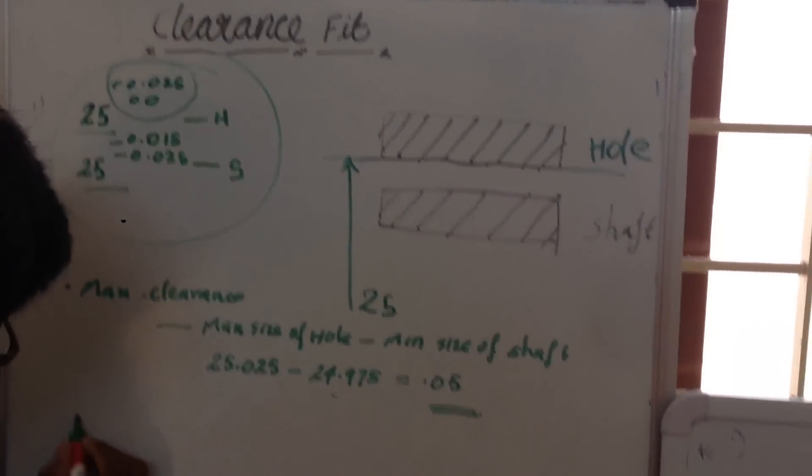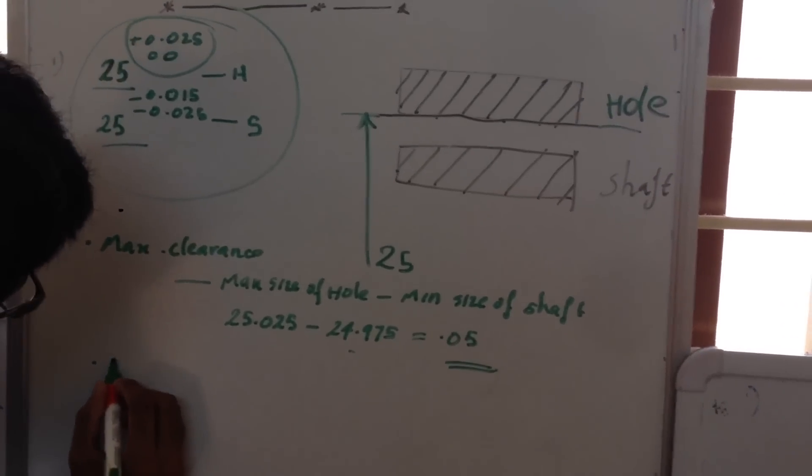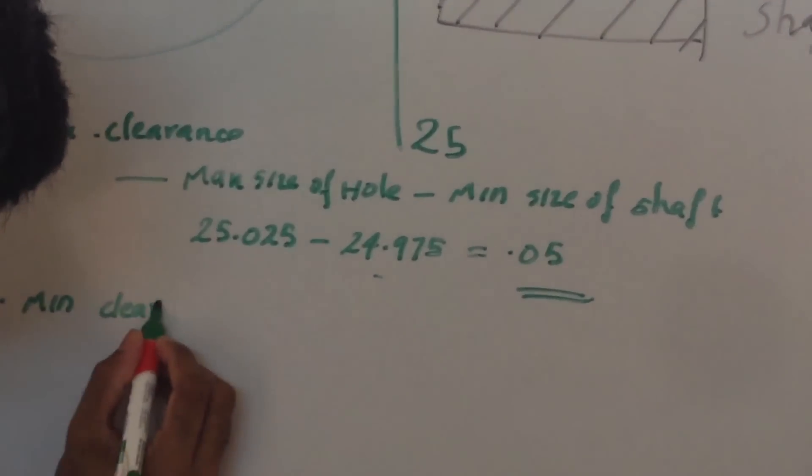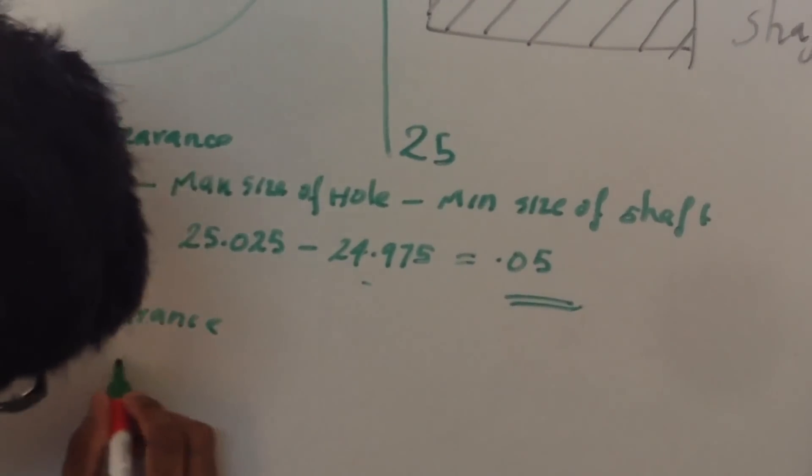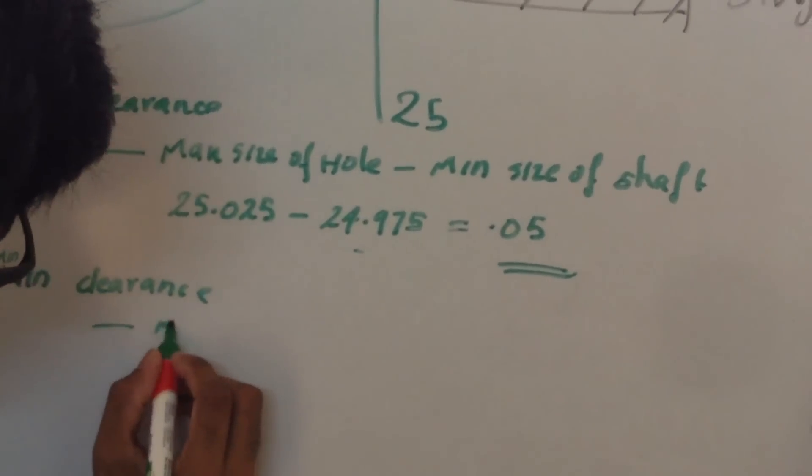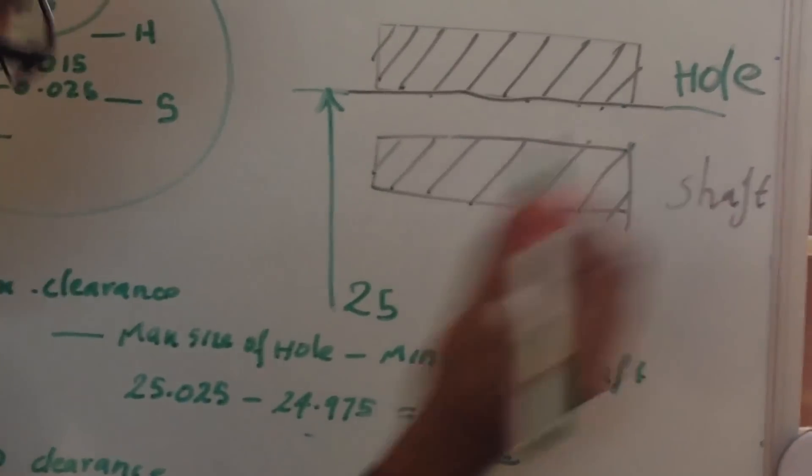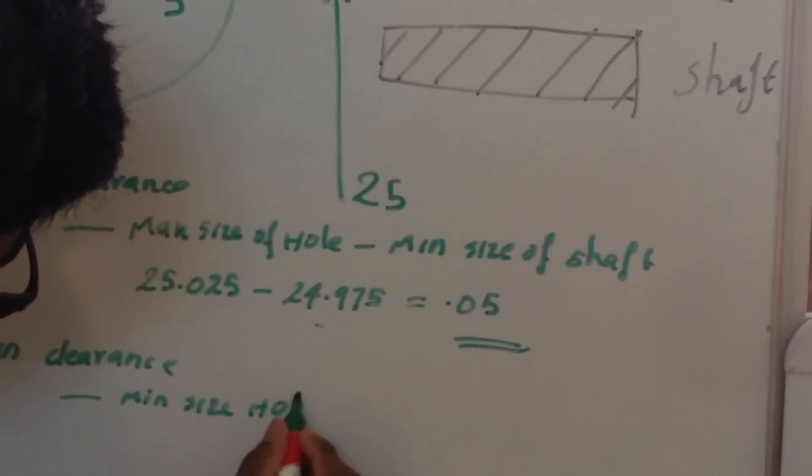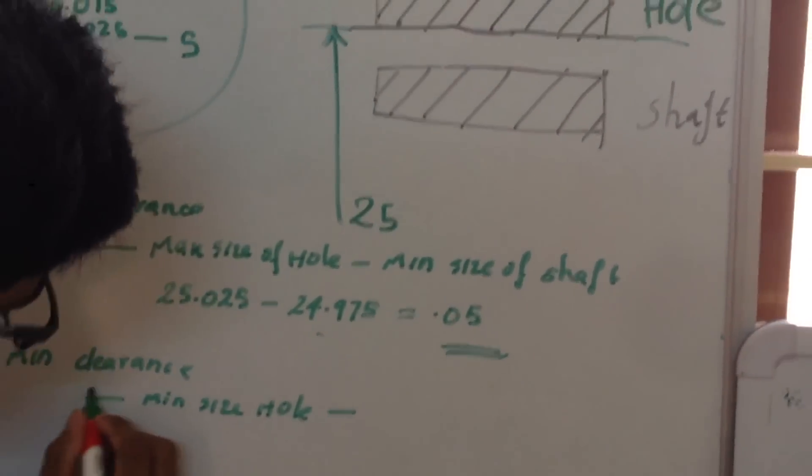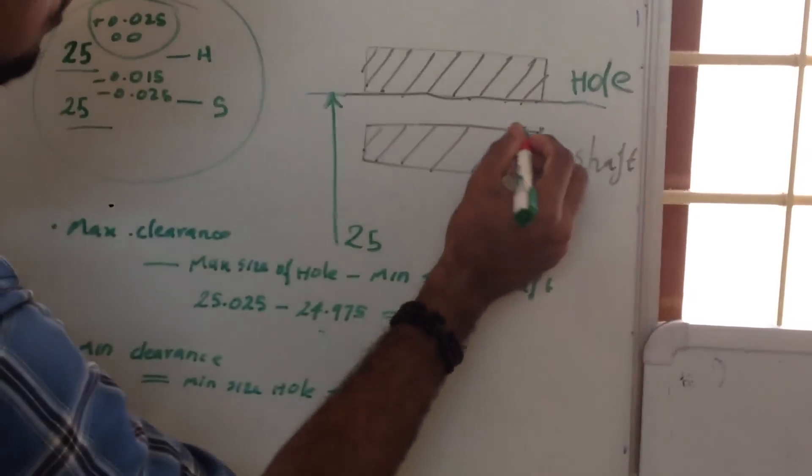For finding minimum clearance, this will become minimum size of hole minus maximum size of shaft.